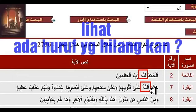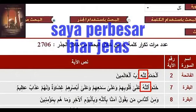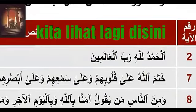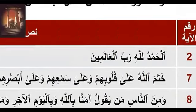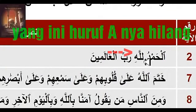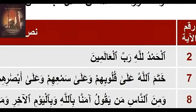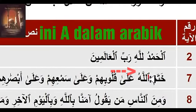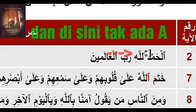Do you notice what is missing in here? Let me make it bigger so people can see it more clearly. If we look again, we will see that there is a missing A — missing A. And the missing A is simply this one. This is A in Arabic. In this form, we don't find it.